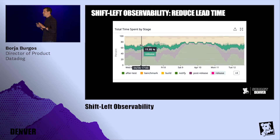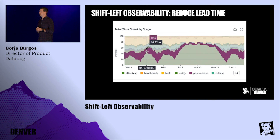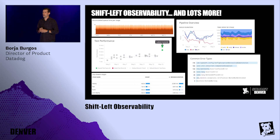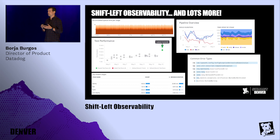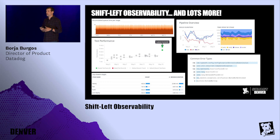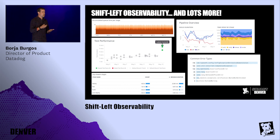But this is just scratching the surface. There's a lot more you can do by applying observability principles to the development workflow. You can start monitoring queue time — do we have good queue time that we can't avoid, or queue time we could do without? You can start looking at timing information — stages, jobs, what's taking the longest, where you have regressions.